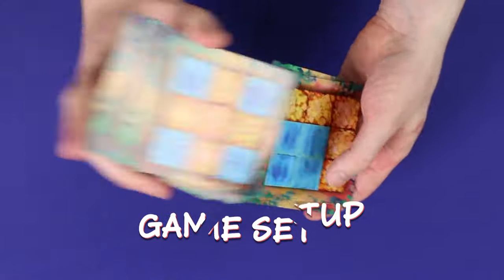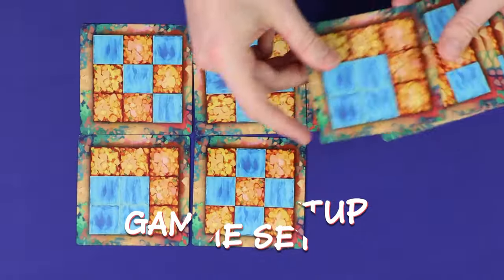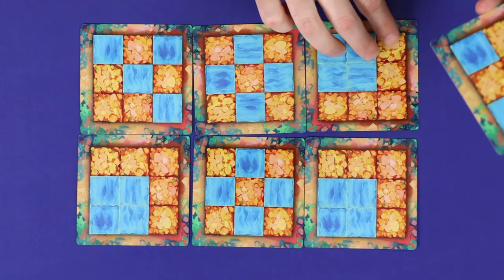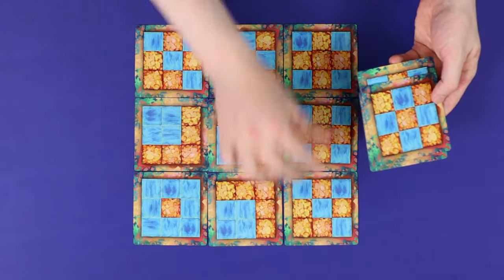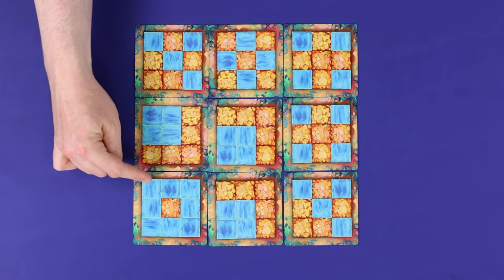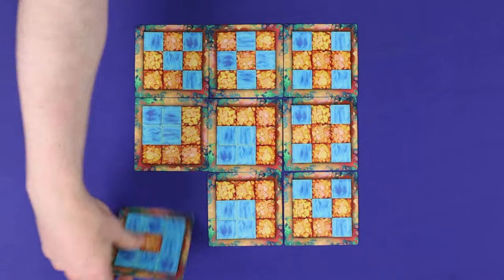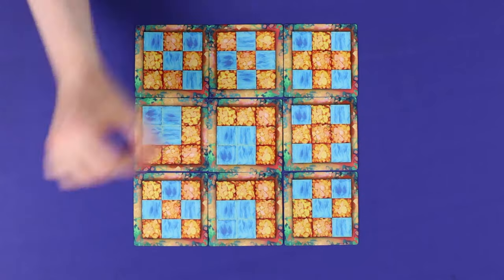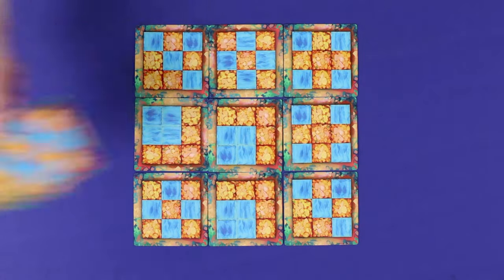To set up, shuffle all of the terrain cards and then create a 2x3 grid for a 2 player game, or a 3x3 grid for a 3 or 4 player game. For your first game, all the cards should be lakeside down, that is, the ones showing 8 water spaces should not be visible. Return leftovers to the box.